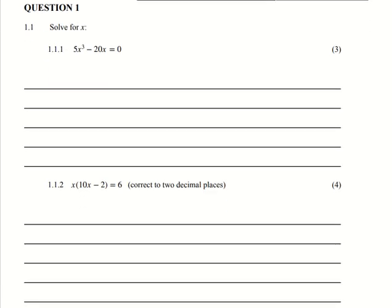Let's get straight to question 1.1: solve for x. We have 5x to the exponent 3 minus 20x is equal to 0. Most of us are used to the generic quadratic equation, but here the highest power is 3. We have a common factor in both the coefficients and the variable. The common factor of the coefficients is 5, and the common factor of the variable is x, leaving us with x squared minus 4.